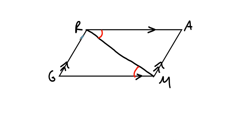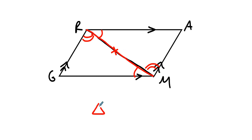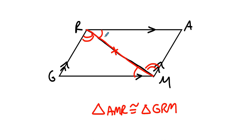But wait — GR is also parallel to MA, so this angle is congruent to that one. And we know that this side right here is shared between triangle ARM and triangle GMR. And so, by golly, triangle AMR is congruent to triangle GRM because angle-side-angle holds.